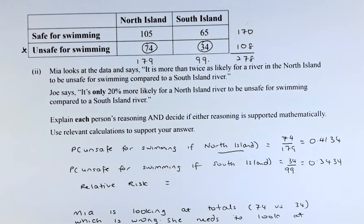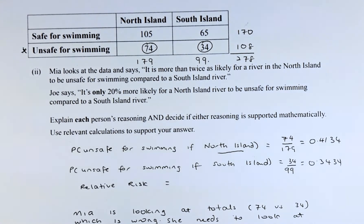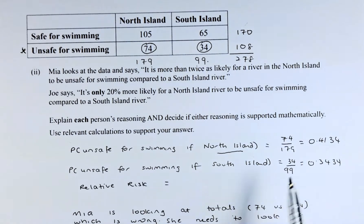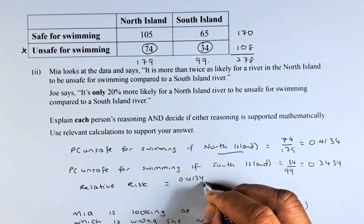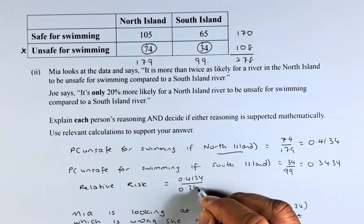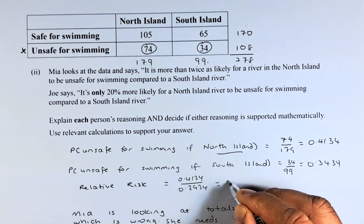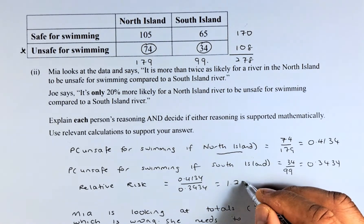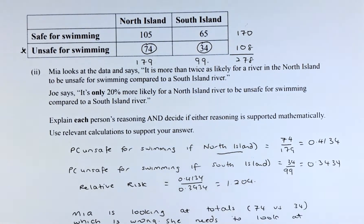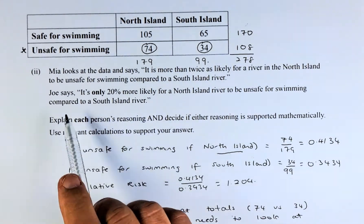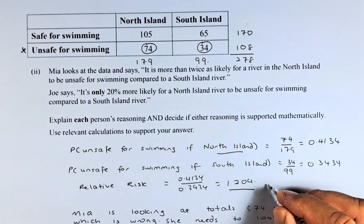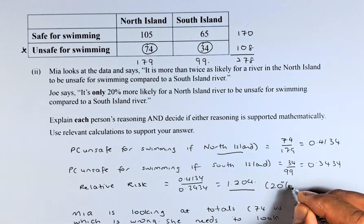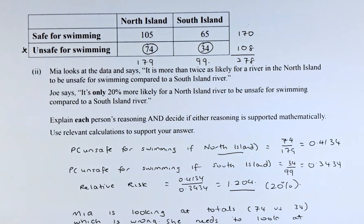How does Joe get 20%? He uses relative risk. To get the relative risk, he takes 0.4134 divided by 0.3434, which comes to 1.204 — that is 20% more, which matches what is mentioned in the question. So that is Joe's reasoning for the 20% figure.